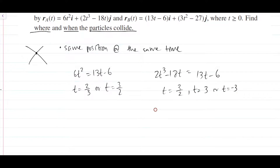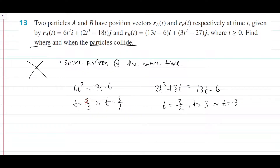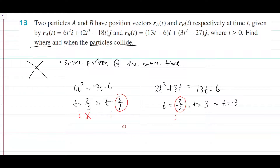You have multiple time values — which one do you pick? If you pick t = 2/3 and substitute it into both particles, they will have the same i position, but when you sub it back into the j components, they have different j positions. Same i but different j. When you sub in t = 3/2, you get the same i and the same j. So what you pick is t = 3/2 — that's the time value where the particles collide. When t = 3 or t = negative 3, the j components are the same but the i components are not. So the collision time is t = 3/2 seconds. Just make the i and j components equal each other and find the time value that is the same for both equations.